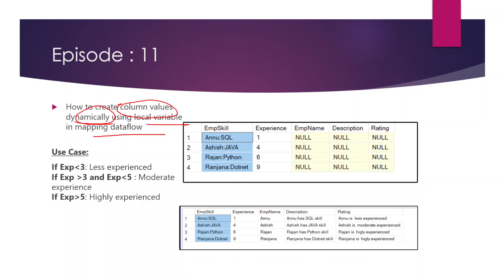If you see the first image, this is our source data - it is basically a SQL table where we have these many rows. If you see the employee skill column, it is having the details of employee name as well as the skill name associated with this employee. In the second column we have the number of years of experience of this employee.